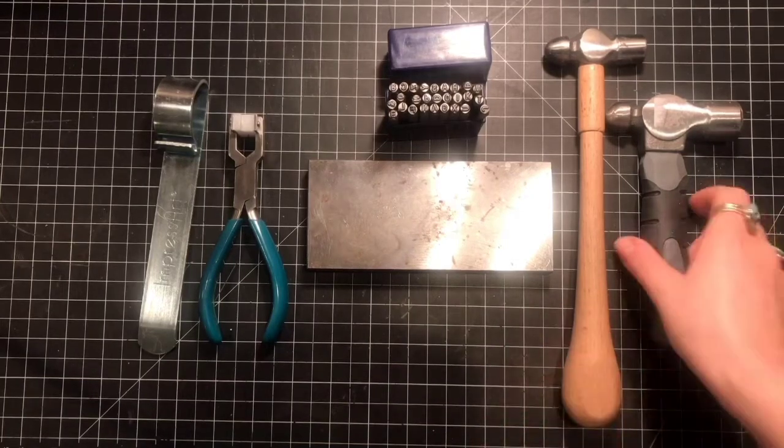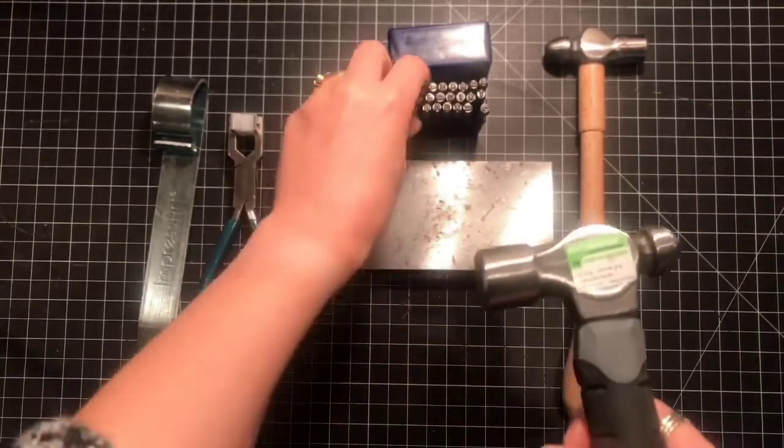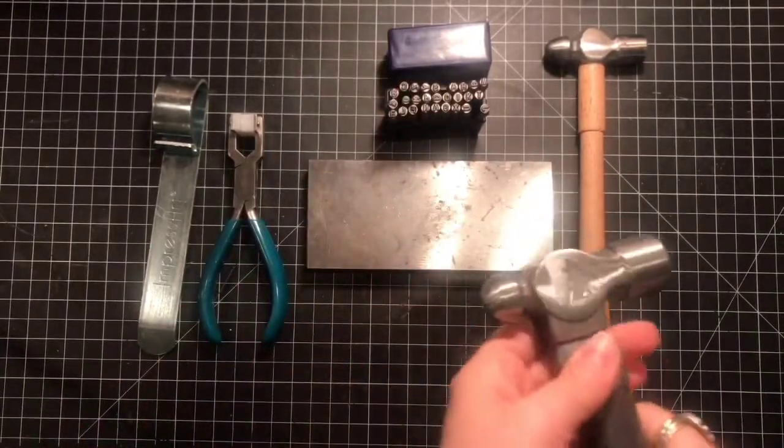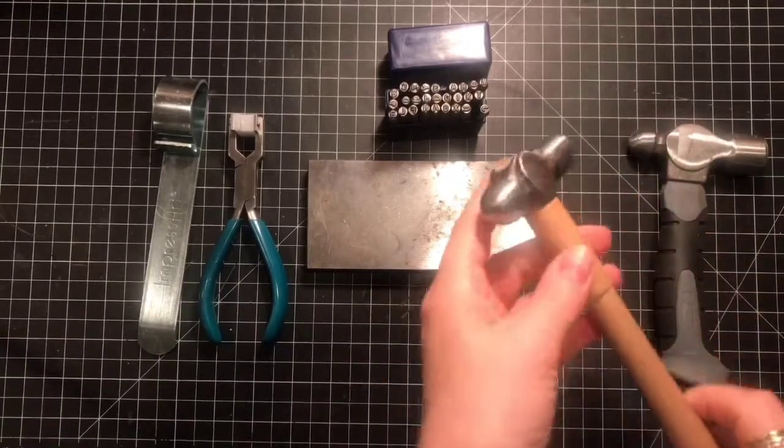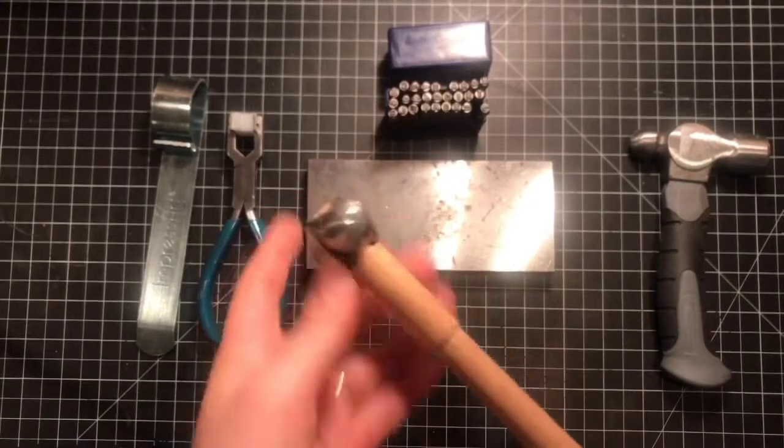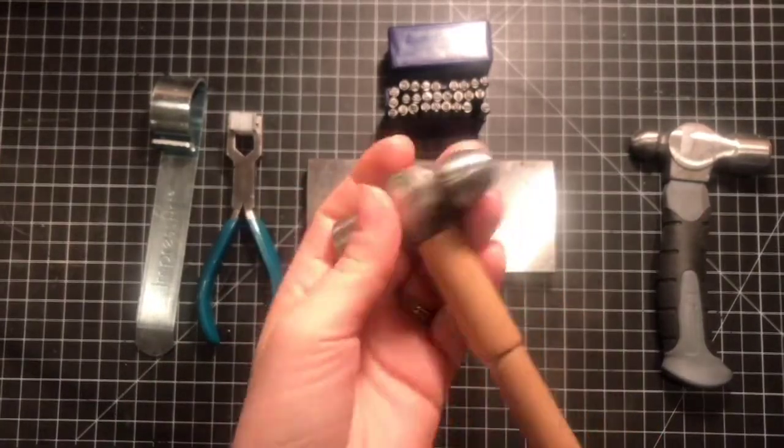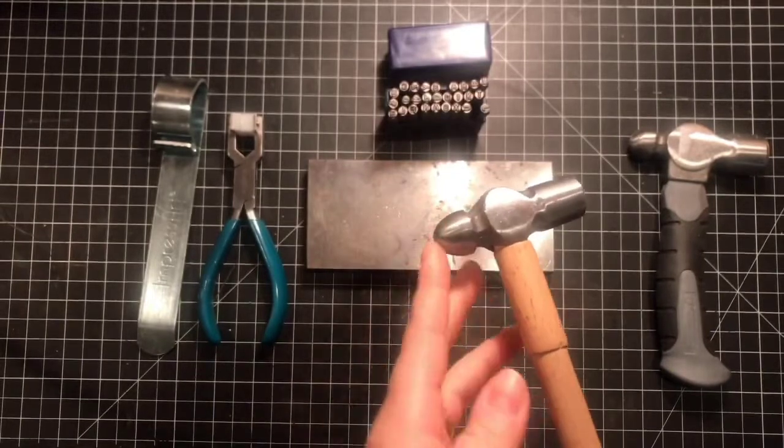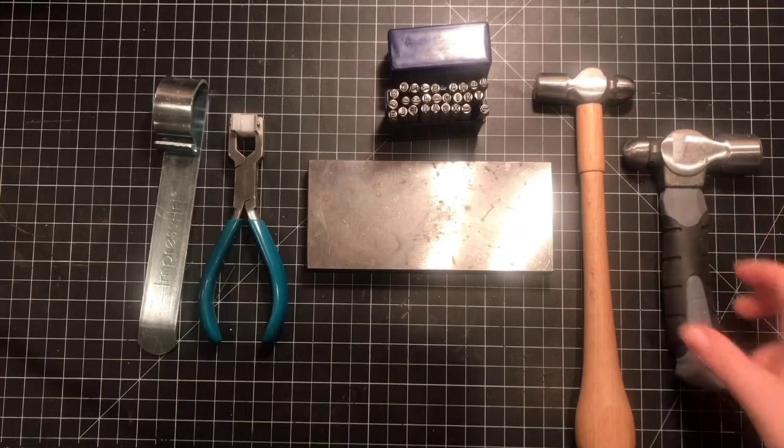So next I have two hammers. This is the one I use to strike the metal letters onto the piece of aluminum and then this one right here I use to put a texture into the metal. I like the look of a hammered texture on my bracelets so this is what I use. I use the rounded side here. So those are the immediate tools that we're going to be using.